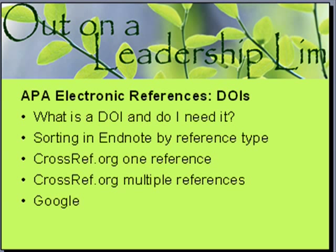If you're doing database searches, there's a good chance that many of those articles you're finding have a digital object identifier. The reason DOIs came along is that part of the problem with web references is the URLs change — how do you find them when it moved somewhere else? These new APA reference rules are trying to deal with that problem.